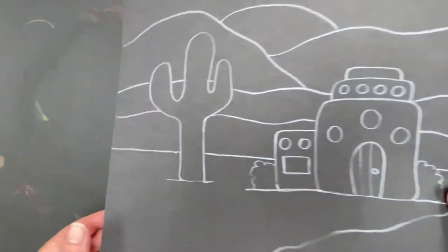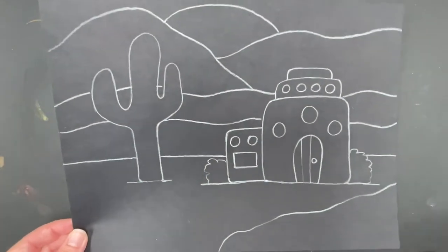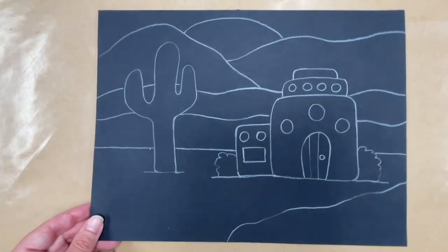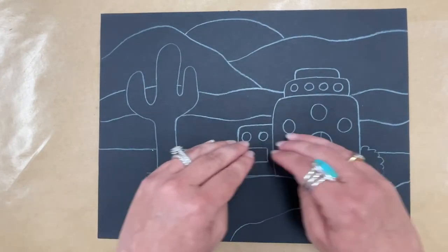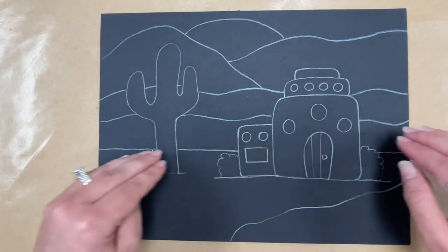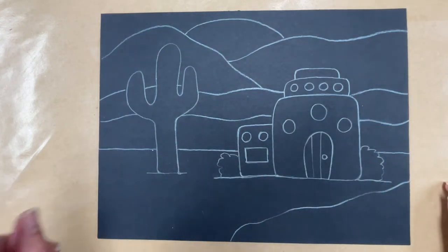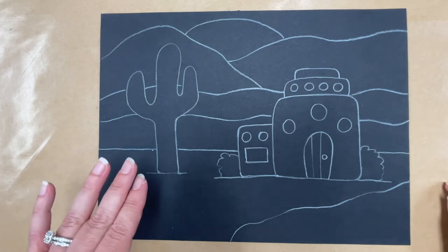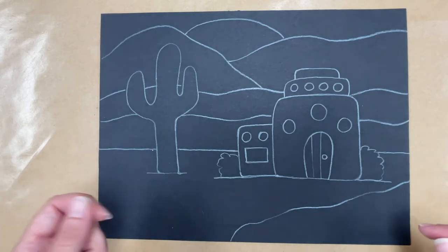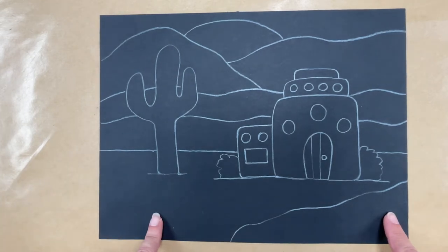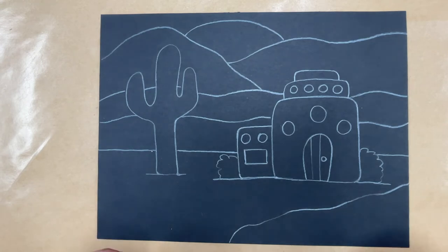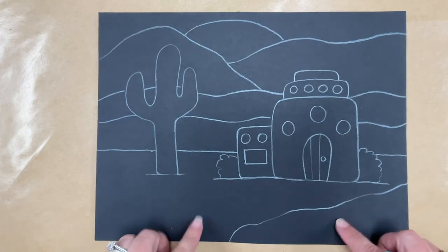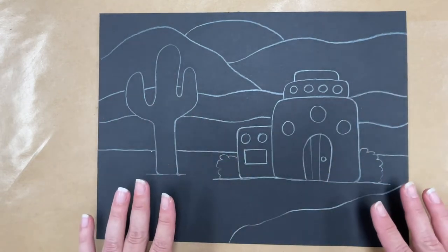You'll be given a piece of black construction paper. Turn it horizontally with the long side facing you. On the back of it, write your name, your teacher's name, your grade, and your school. Flip it over, and then you're going to use a white colored pencil to do all of your drawing because it will show up on this dark paper. You could also use yellow — something very pale and light — because it will all be colored over with your oil pastels.